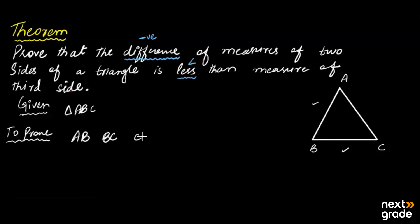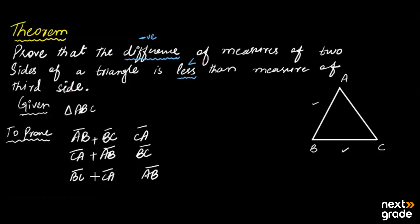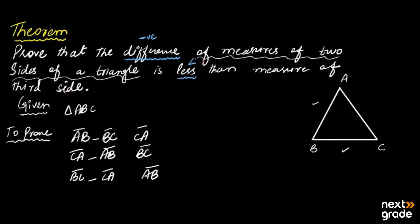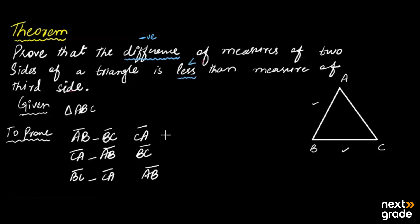You can consider the sides in this sequence: AB, BC, CA — and again AB, BC, CA. At the end you place a plus or minus sign. If the word 'sum' is given, you use plus; if the word 'difference' is given, you use minus. Here the condition given is the difference of measures of two sides of the triangle is less than the third side.